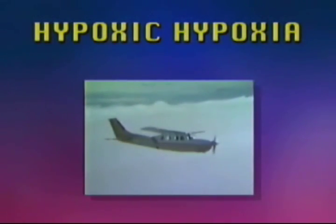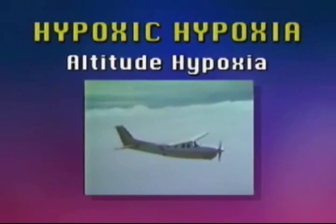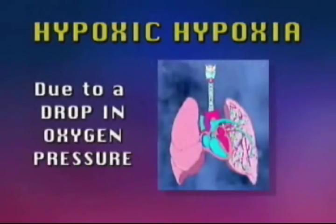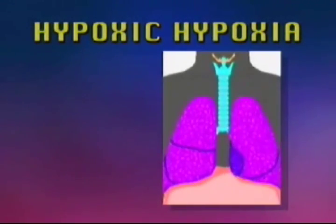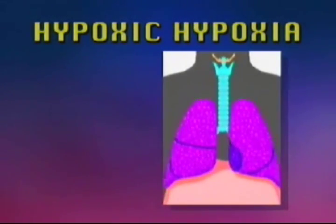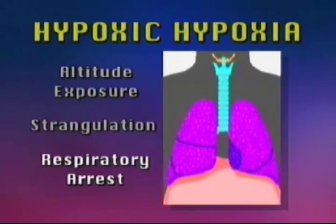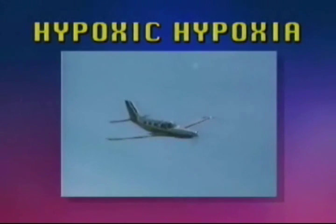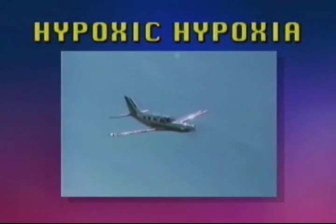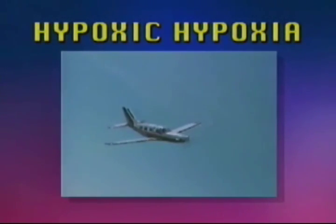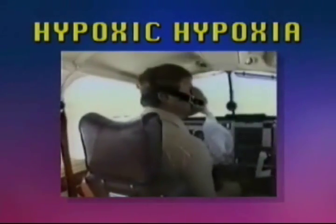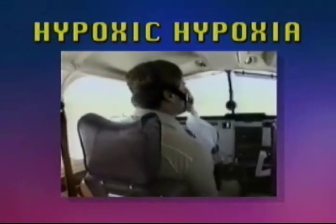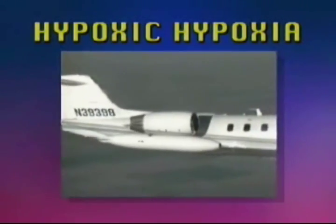Hypoxic hypoxia, also known as altitude hypoxia, is the most common form of hypoxia in aviation and occurs due to a drop in oxygen pressure at the lung level. It can be caused by a decrease in the pressure of oxygen in the inspired air resulting from altitude exposure, strangulation, or respiratory arrest. In the aviation environment, hypoxia can occur when flying an unpressurized aircraft above 10,000 feet. Other causes include failure of the aircraft oxygen systems, improper use of that equipment, or failure of the pressurization system.